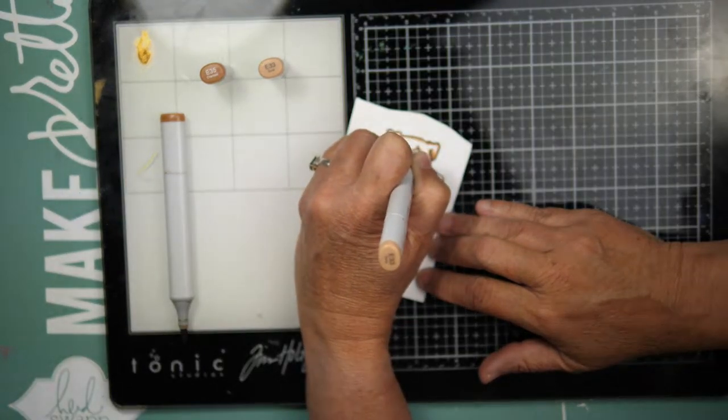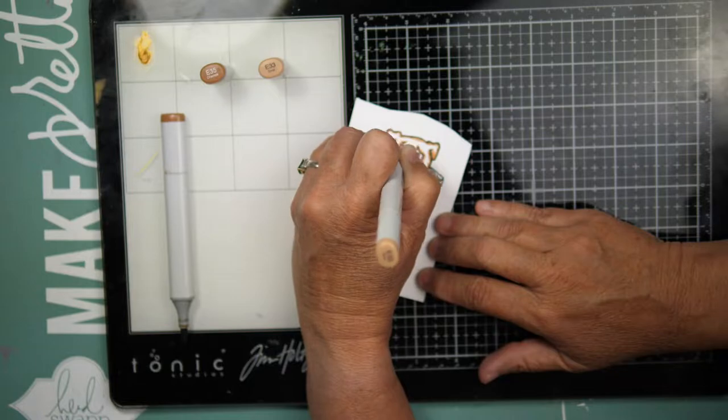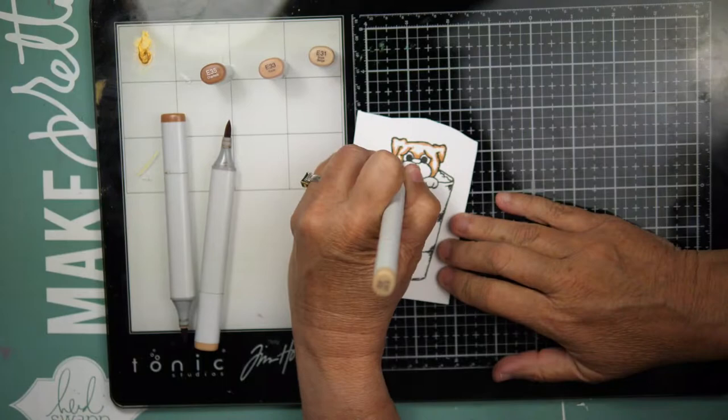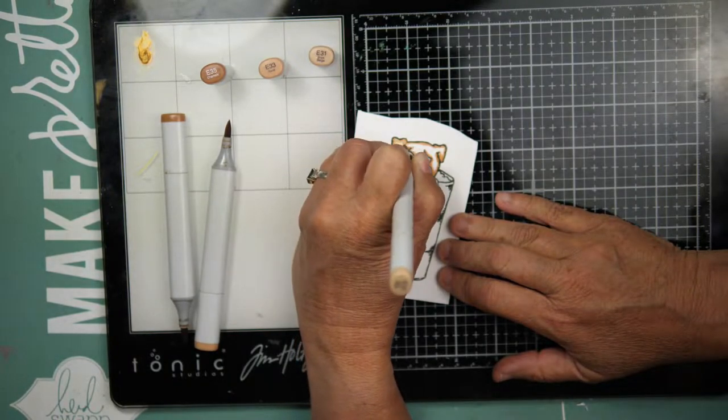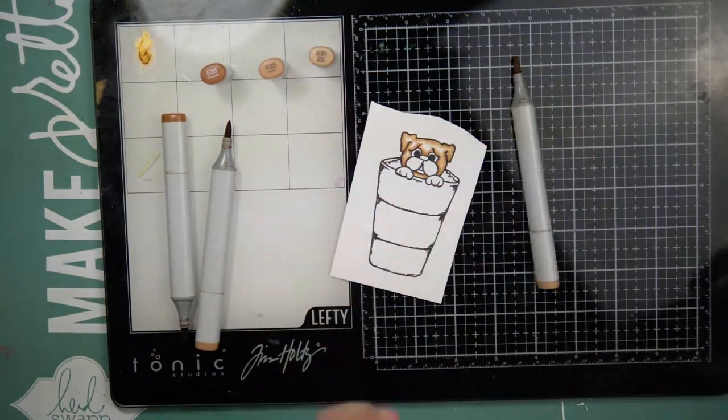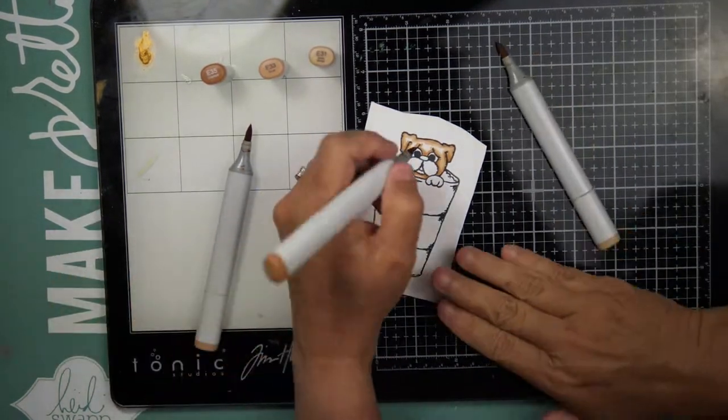And then I will go over the image again just to deepen those shadows. And once I have all of my color laid down, I do use the Mindy Egan method.